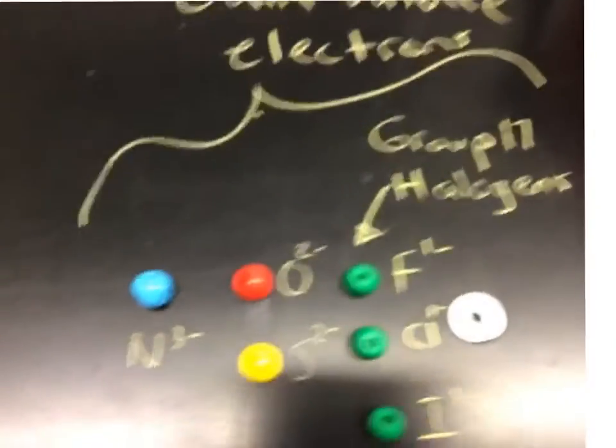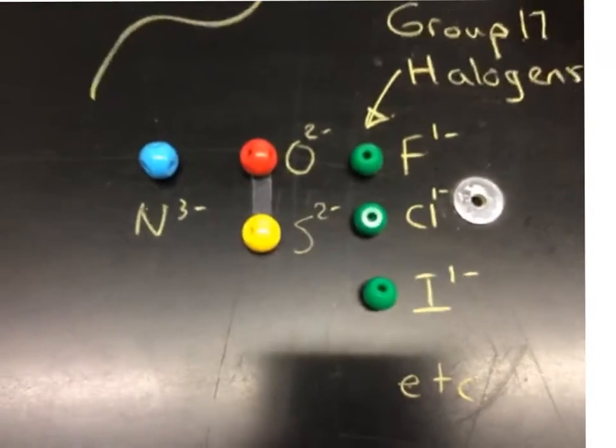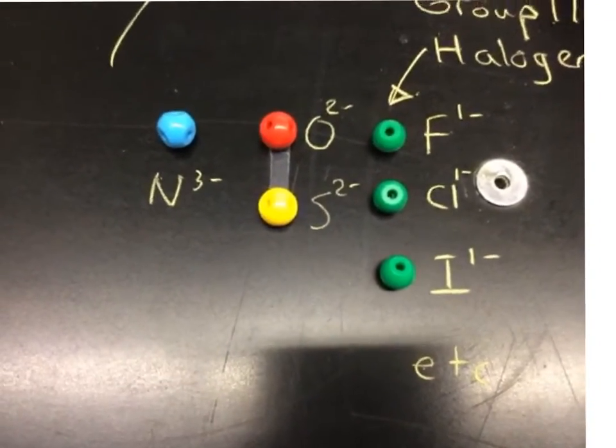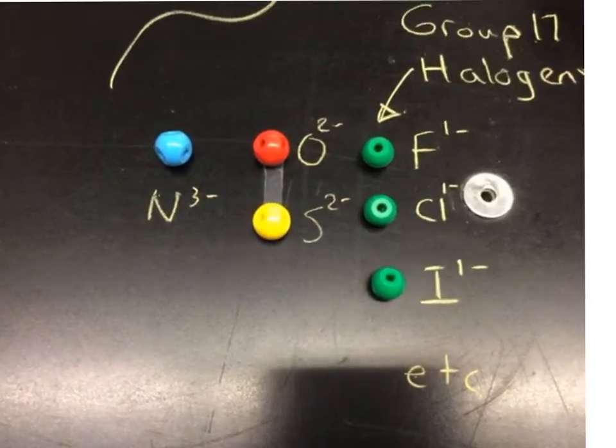The non-metals are colorful, so our halogens are green. They have one hole because they want one valence electron to be full.